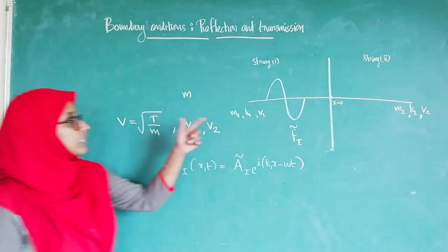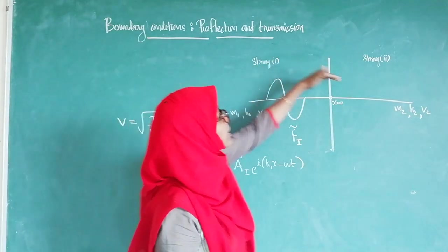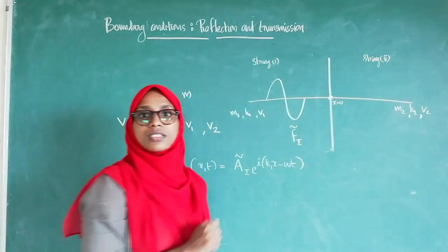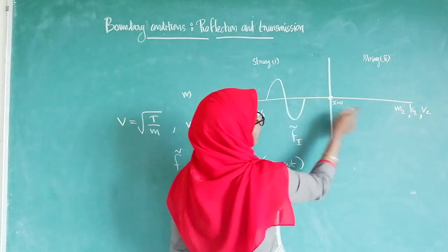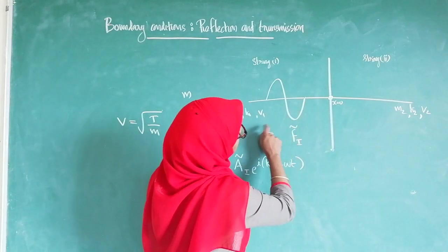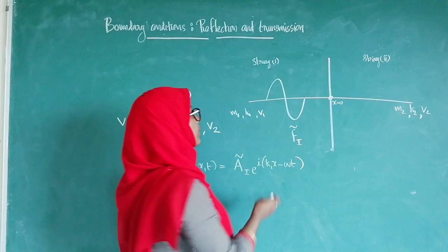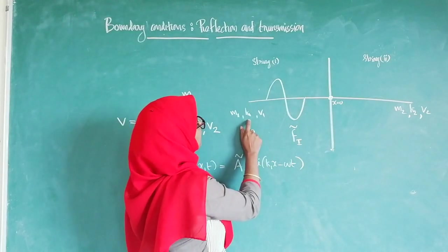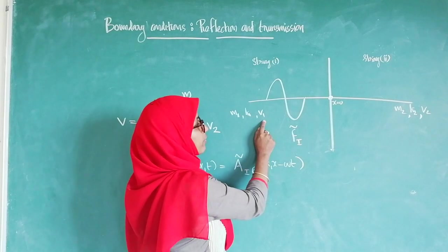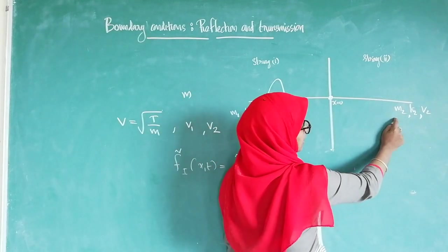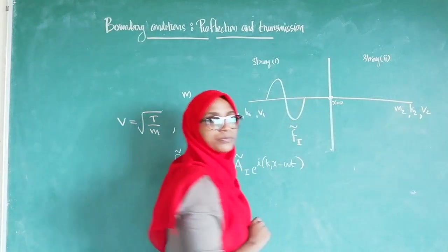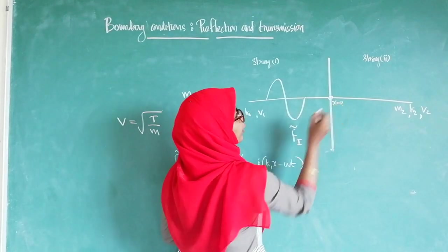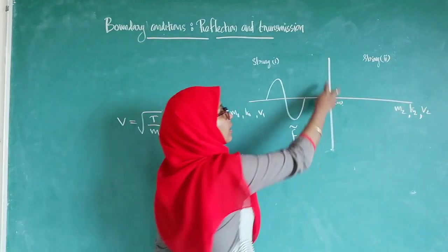We know this is string 1 and string 2, and this is the node through which these two strings are connected. Both strings are tied with the same tension. The mass in string 1 is M1, the wave number is K1, and the velocity is V1. Similarly, in the second string the corresponding values are M2, K2, and V2. They are tied at a node at X equal to 0, and this is the boundary.